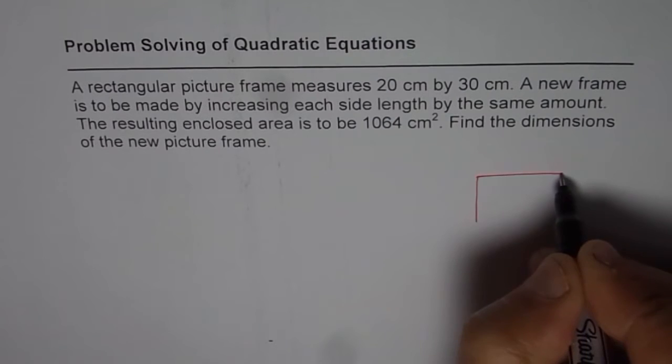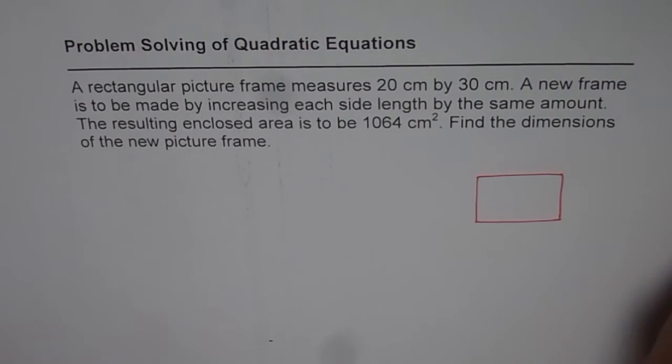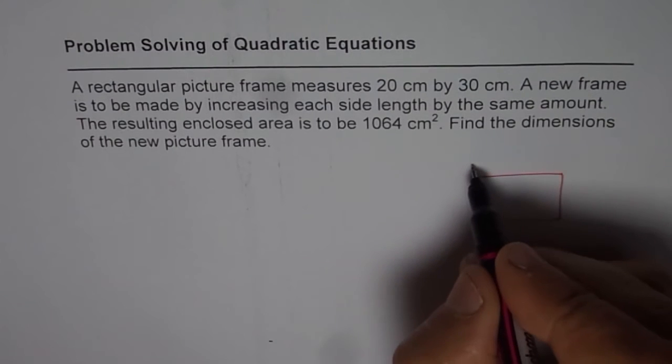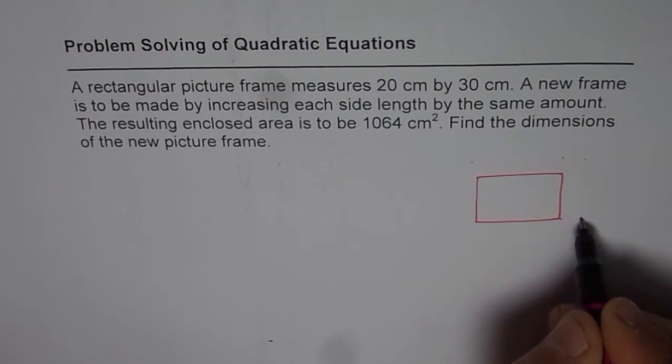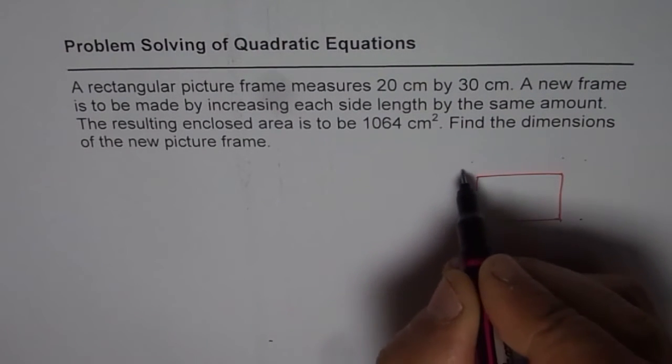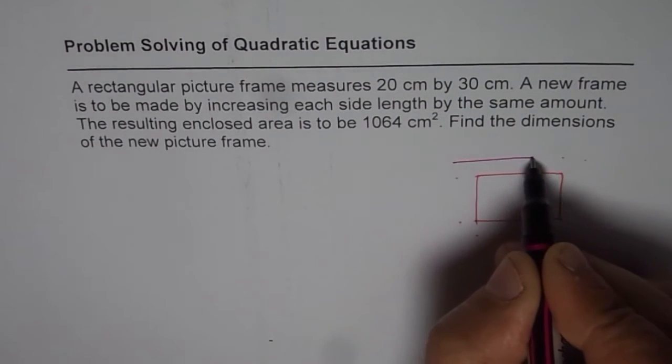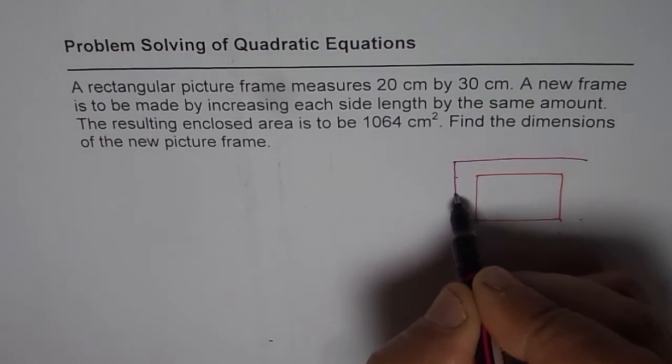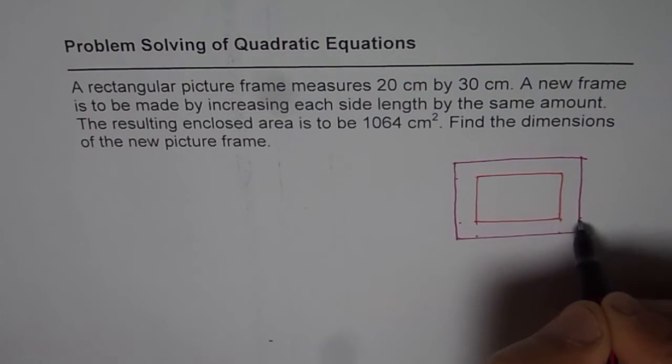So let's first sketch. Let us say this is given to us and that is 20 by 30. Now we need to increase this by the same amount. So that means we will increase length and width by the same amount. So we have a frame which is slightly bigger, kind of like this.